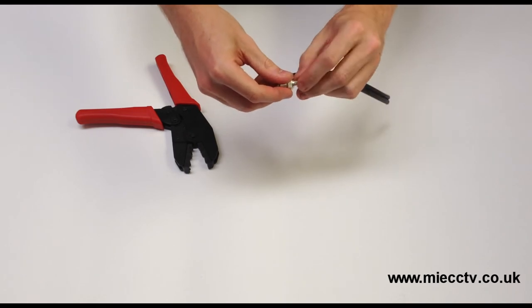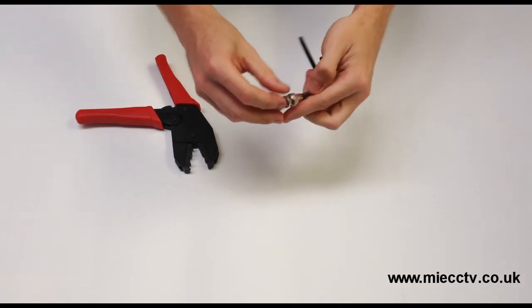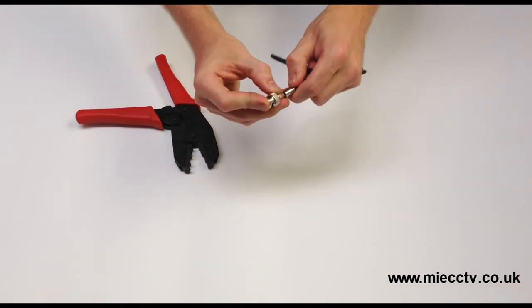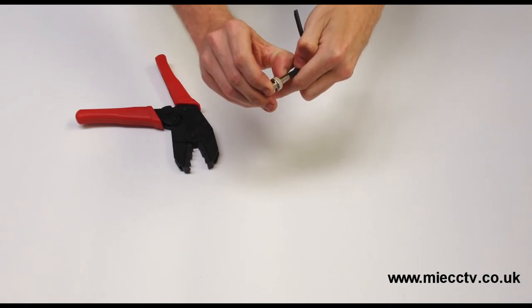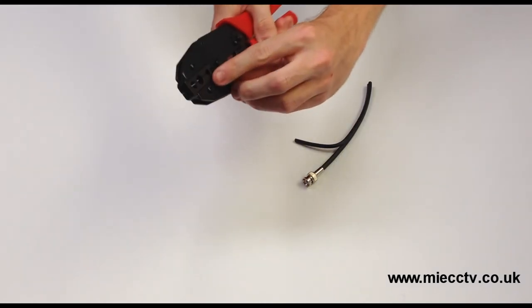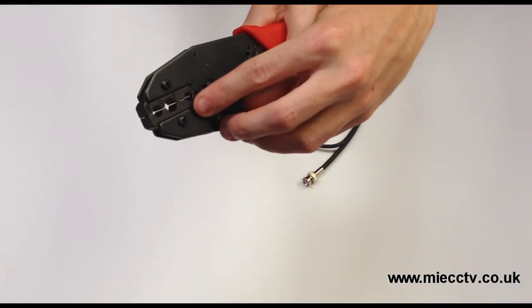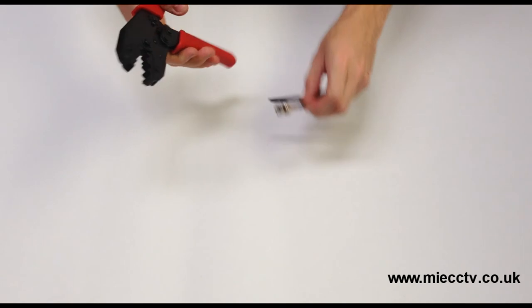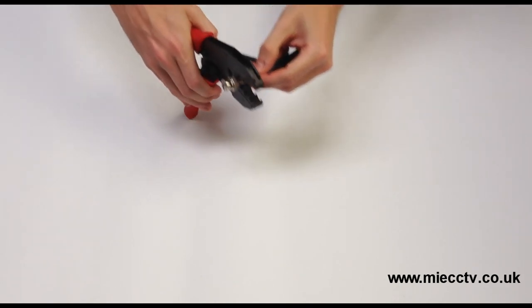Now you can crimp the ferrule, this requires a 0.256 inch or 0.255 inch crimp. Place the ferrule into the jaws of the crimp tool and once again close the tool until the ratchet releases the cable.